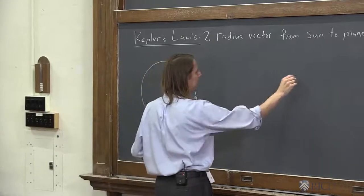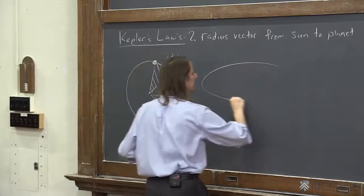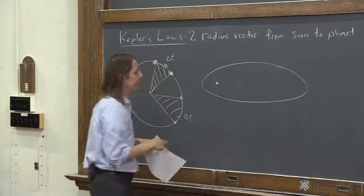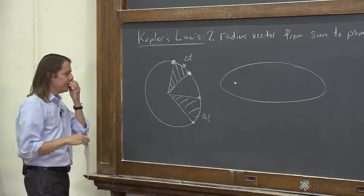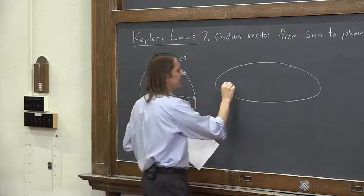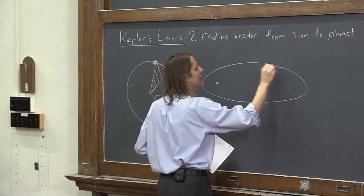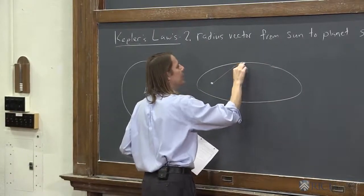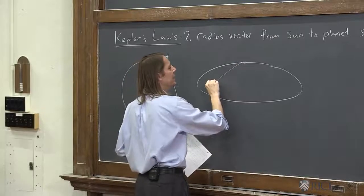So let's draw our elliptical orbit again, highly elliptical orbit. Let's put the sun over here to focus. And then you can see that if you had the planet here, say, how about there, and you waited delta t, and then it went here, that's a really big area.